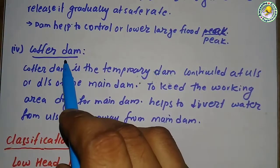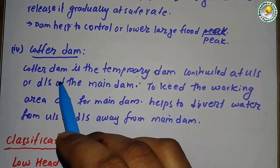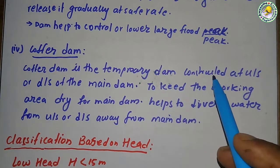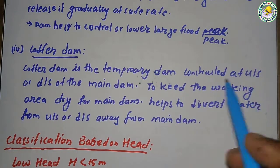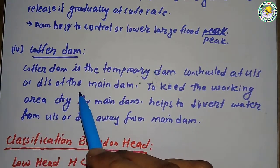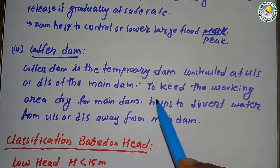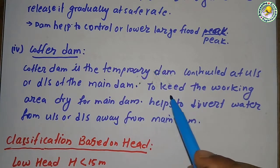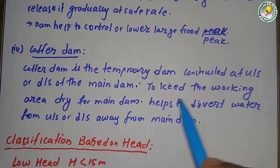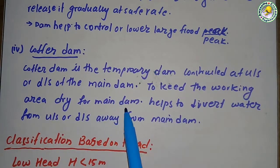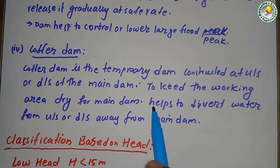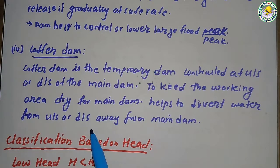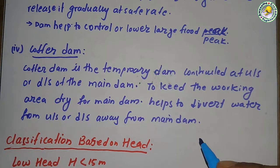A cofferdam is a temporary dam constructed at the upstream or downstream of the main dam to keep the working area dry. It helps to divert water away from the main dam's construction site.